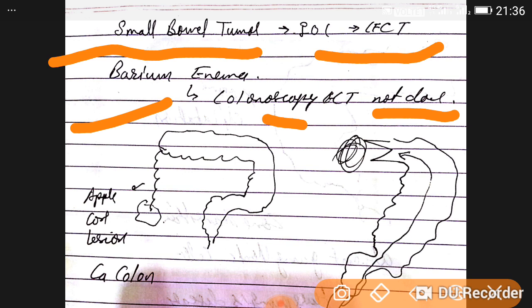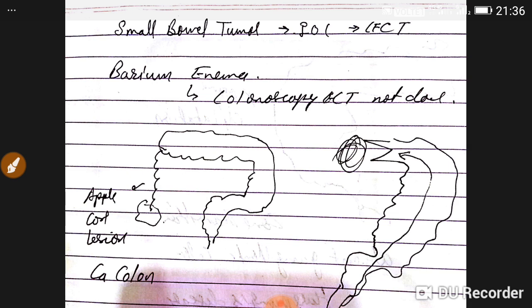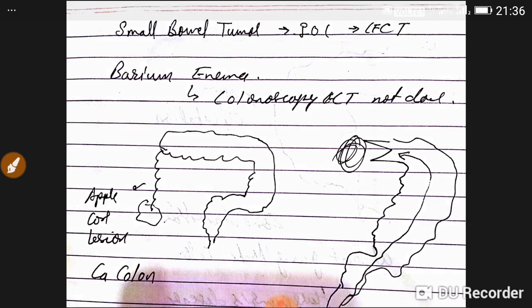On CECT, we see the apple core lesion or sign. It is seen in carcinoma of colon. How to remember? Only the core is left; the whole apple is eaten. When the whole apple is eaten in this way,